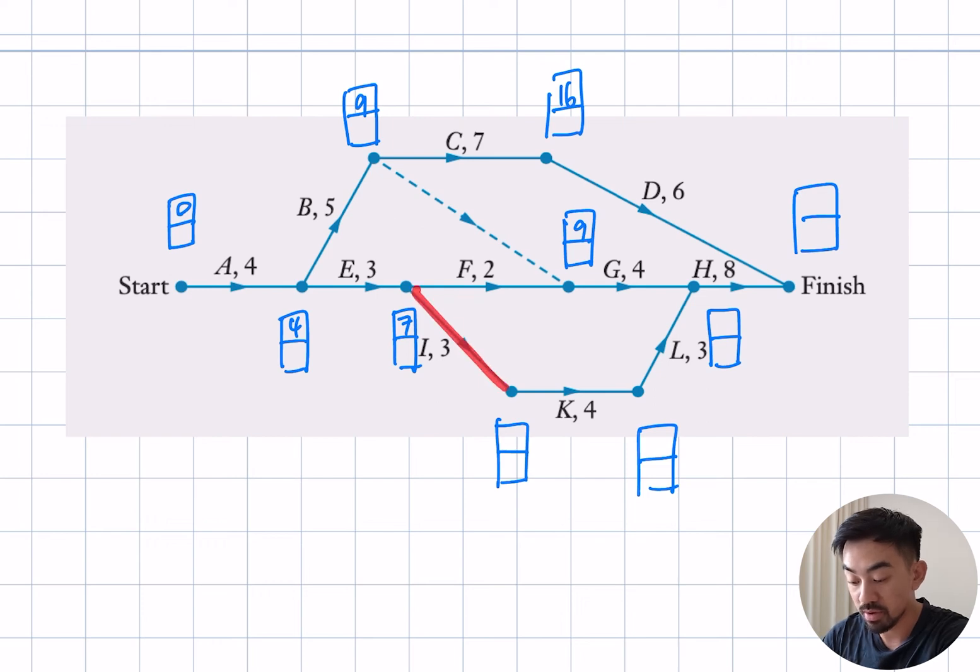Okay, moving down here, 7 plus 3 is 10. Moving along to K, 10 plus 4 is 14. Need to make a decision here. Is it 9 plus 4 or 14 plus 3? It's going to be 14 plus 3, right? Because that's 17. And then finally, is it 16 plus 6 or 17 plus 8? Well, 17 plus 8 because 25 is bigger than 22. 25.